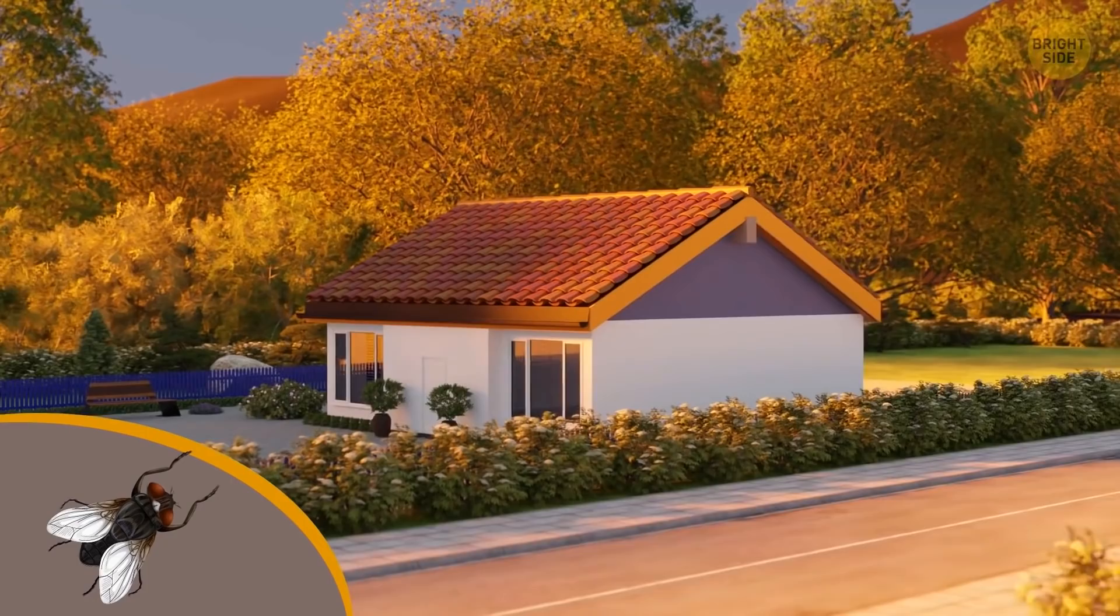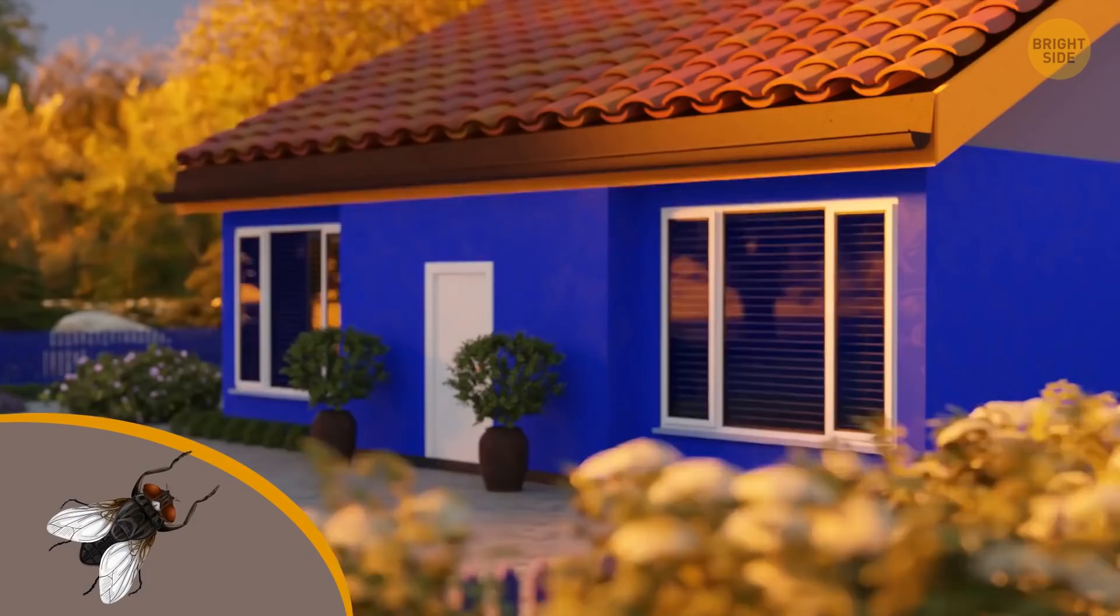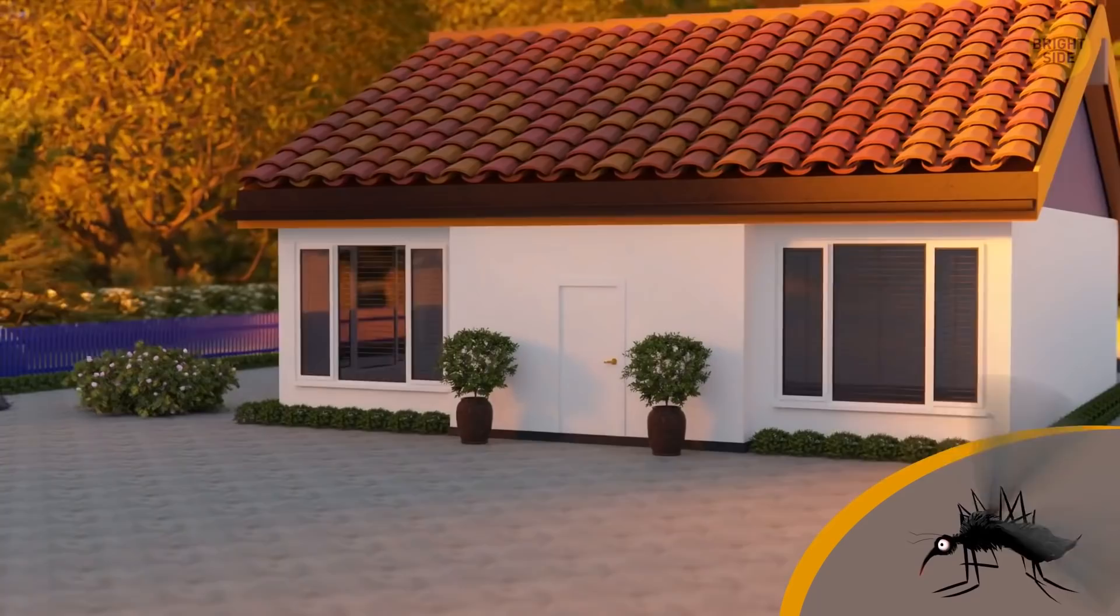White window and door frames. If the outside of your house is painted white, you might consider choosing colors like green and blue instead, because they're less attractive to bugs. If mosquitoes are your problem, better keep the white paint because they like darker colors.